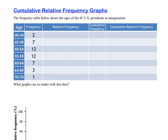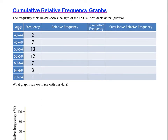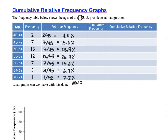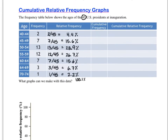For our next example, we're looking at the ages of the 45 U.S. presidents at inauguration. The frequencies are already filled in, so we're going to fill in the rest of the chart. The total frequency is 45, so when we calculate the relative frequency, we divide the frequency by 45. You can see we've calculated 4.4% for the first row — go ahead and pause the video to fill out the other relative frequencies.